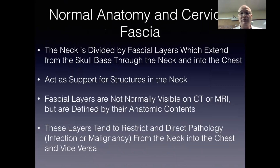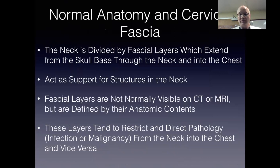The fascial anatomy of the neck is divided into multiple layers which extend from the skull base through the entire neck and well under the chest. This fascia acts as a support structure for the neck. It's important to note that these fascial layers are not normally visible on CT or MRI, but given their fibrous nature, tend to restrict indirect pathology, whether infection or malignancy, from the neck into the chest or vice versa, from the chest up into the neck.